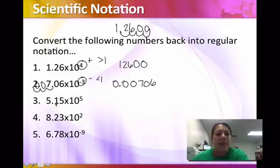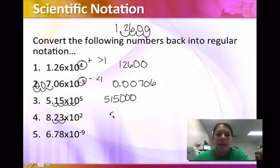5 places and we need to make it bigger than 1. 1, 2, 3, 4, 5. So this one is going to require 3 zeros. So that's your number. Bigger than 1 because it's a positive 2. So that decimal just ends up right behind the 3 and I don't need to add any zeros.